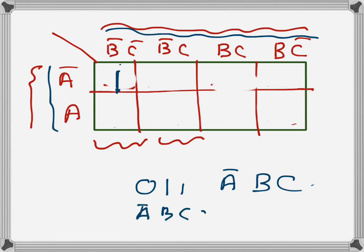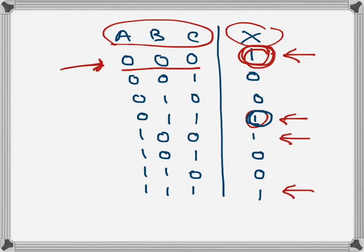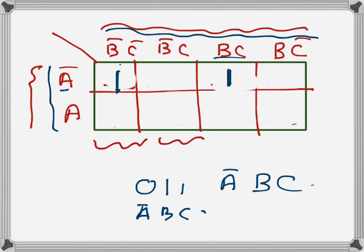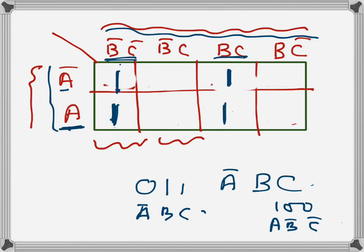There is another one at 1-0-0, which means A B-bar C-bar: A is one, B is zero giving B-bar, and C is zero giving C-bar. That corresponds to the cell in the second row at the B-bar C-bar column. Finally we have a one at 1-1-1, meaning A-B-C, which goes in the bottom-right cell. Now all four ones are placed in the K-map.